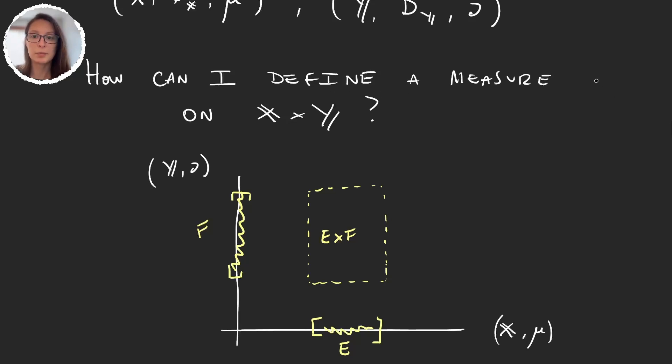So let's say that my product measure, or some measure in this product space, is called lambda. Then if I want to measure lambda of E times F, I would expect this to be the measure of E (E is measured with measure mu) times the measure of F (and that is with nu as a measure). So measure of E times measure of F. This would make sense.